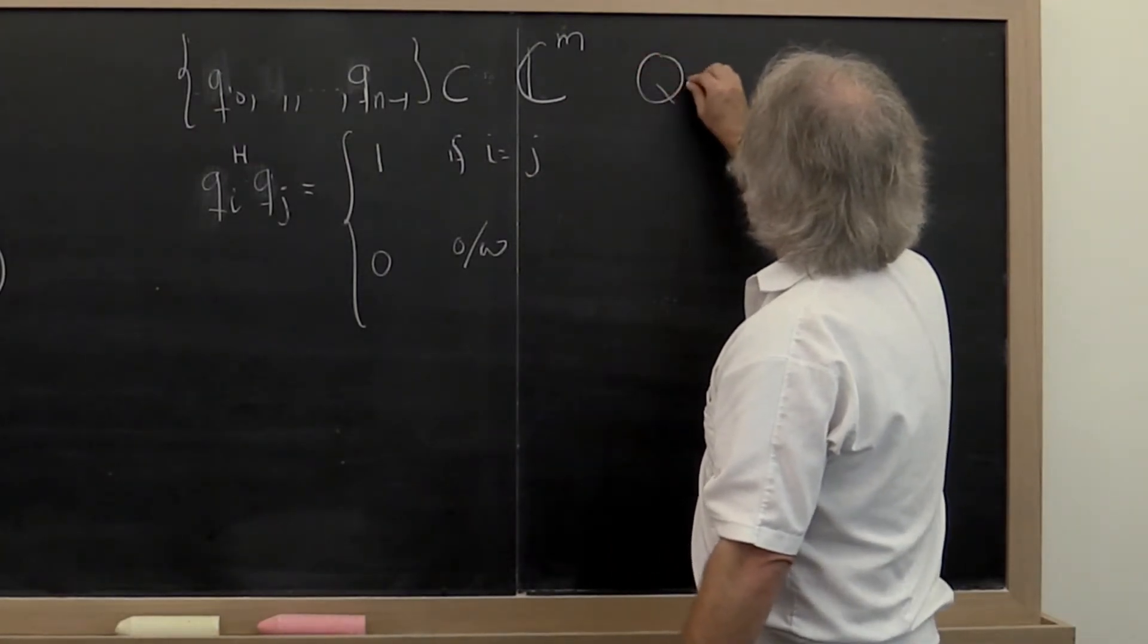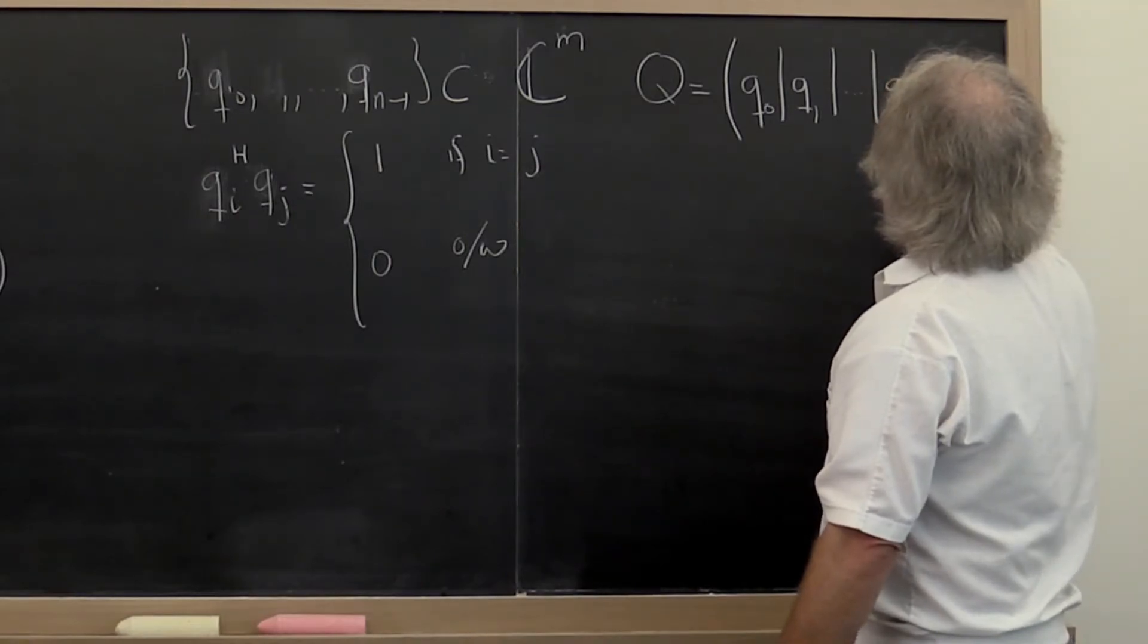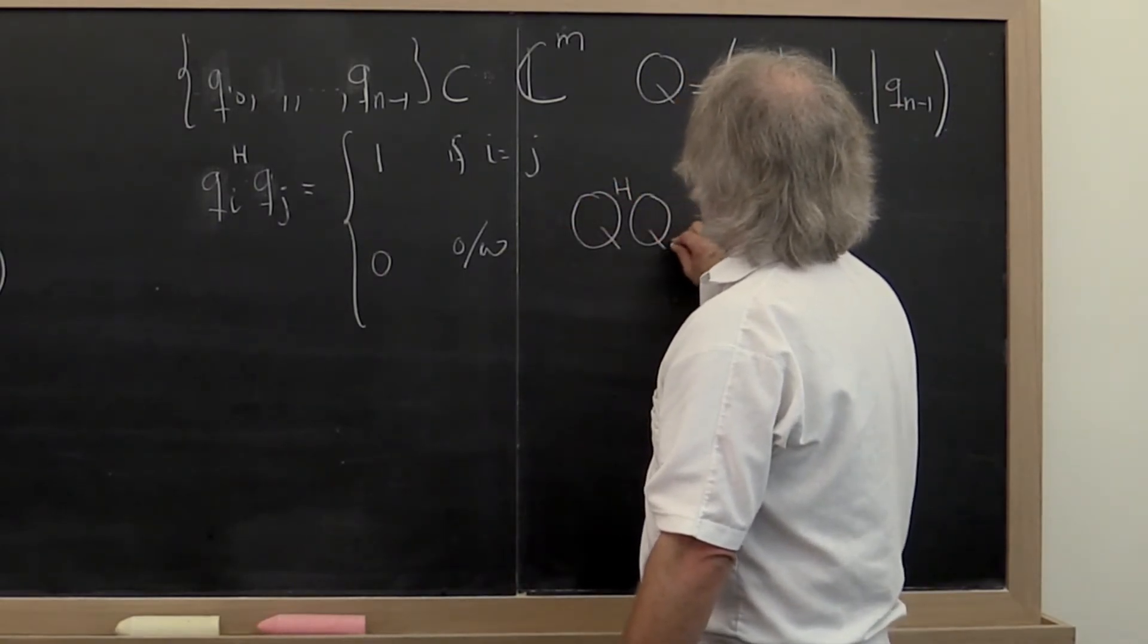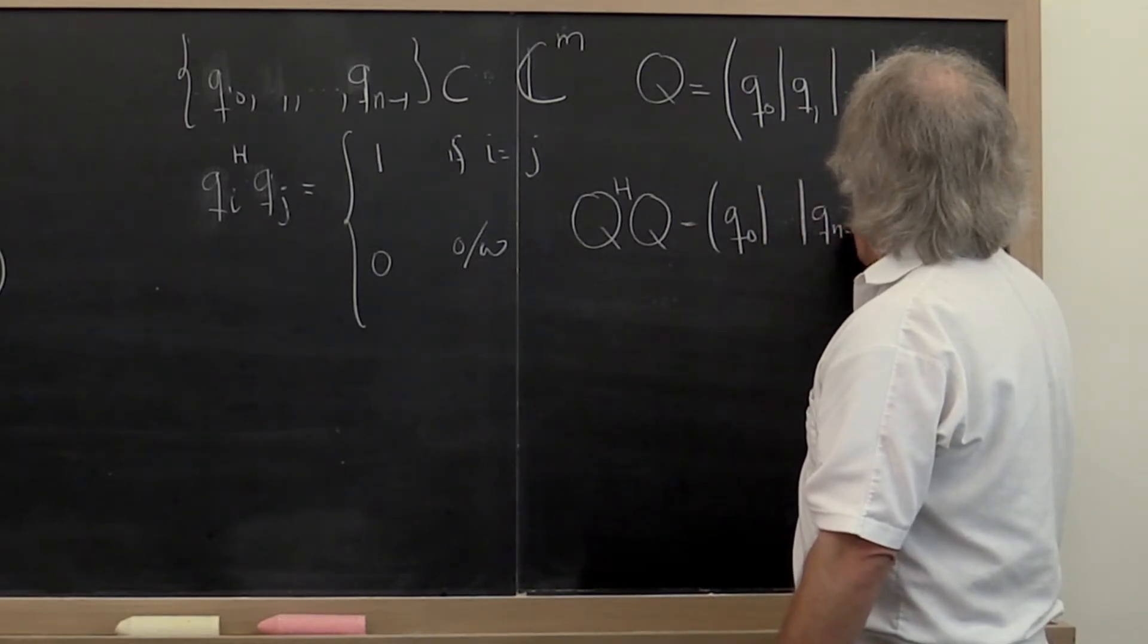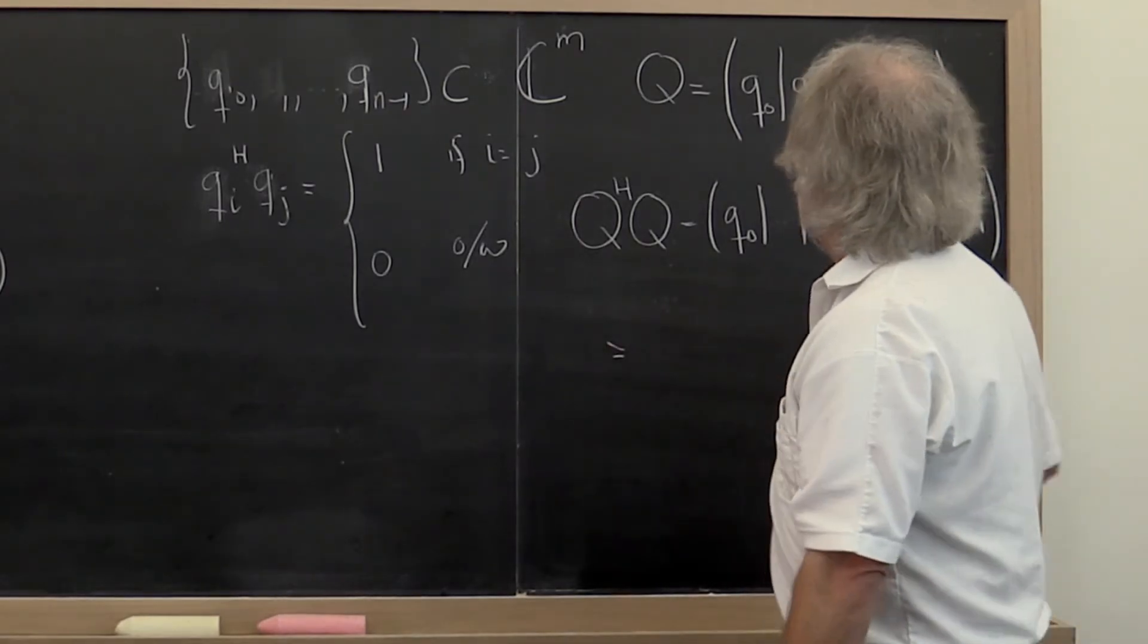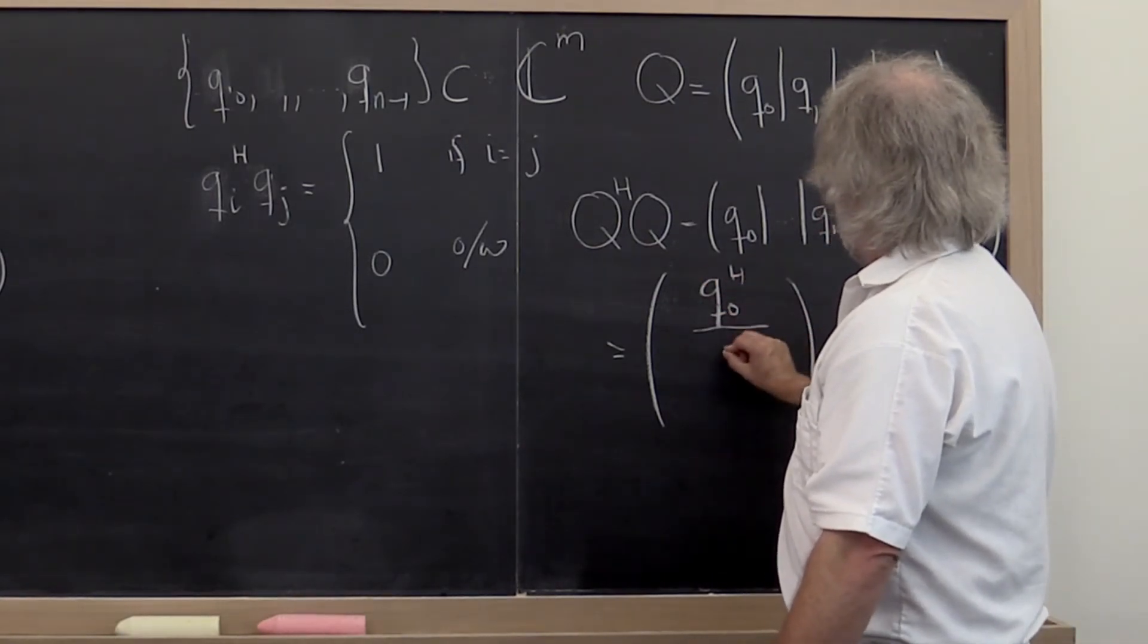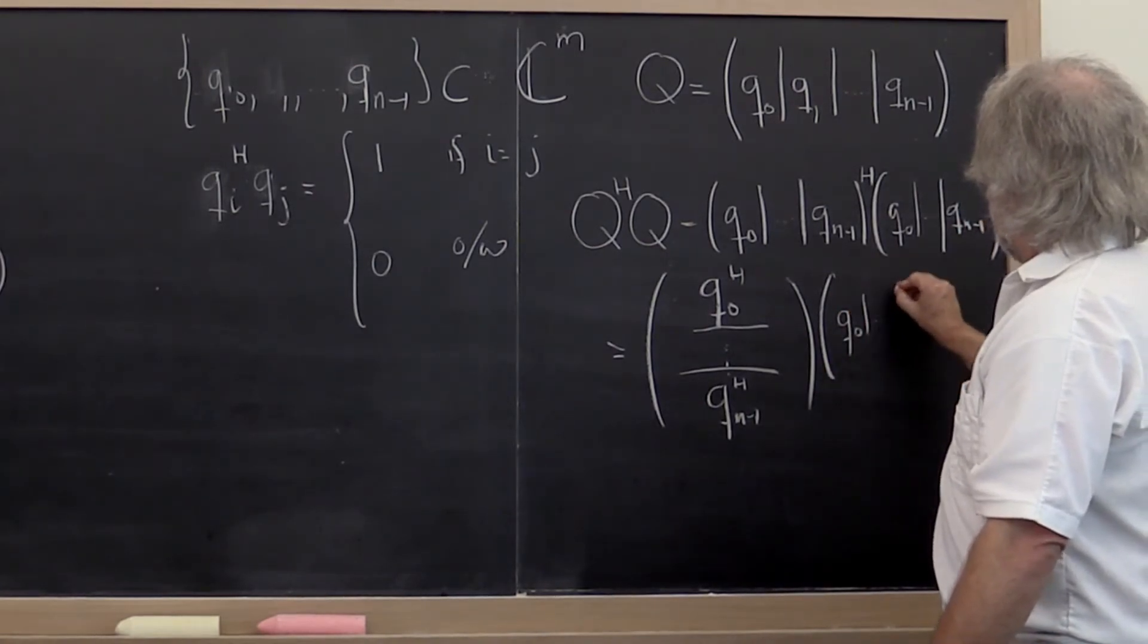Now let's take those vectors and let's make them the columns of a matrix. What happens if you look at Q Hermitian transpose times Q? Well, that's Q0 through Q_{n-1}, taking the Hermitian transpose of this means that you make columns into rows, but you have to conjugate them as well. So we get Q0 Hermitian through Q_{n-1} Hermitian times Q0 through Q_{n-1}.